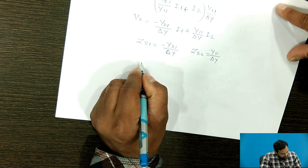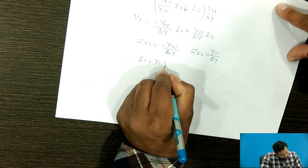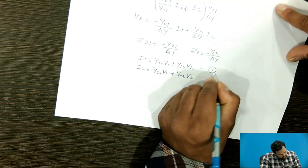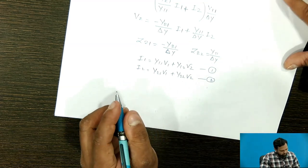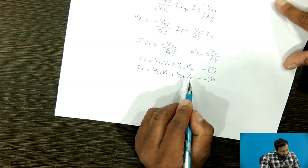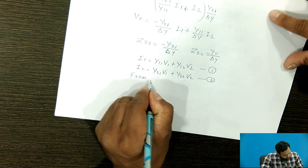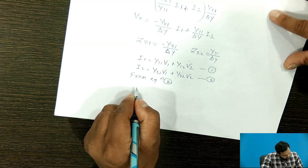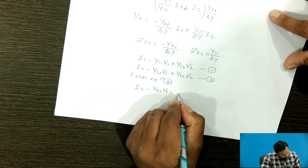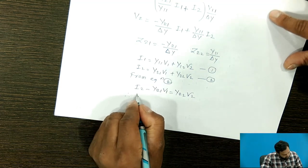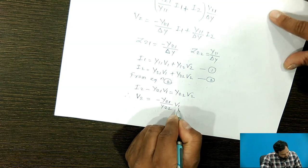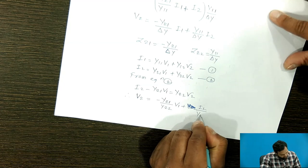We again write the Y parameter equations: I1 = Y11·V1 + Y12·V2 (equation 1) and I2 = Y21·V1 + Y22·V2 (equation 2). Previously we found V1 and substituted into equation 2; now we find V2 from equation 2 and substitute into equation 1. From equation 2: I2 - Y21·V1 = Y22·V2, therefore V2 = (I2 / Y22) - (Y21 / Y22)·V1.